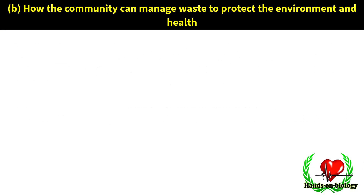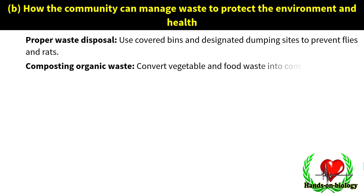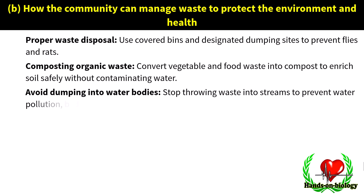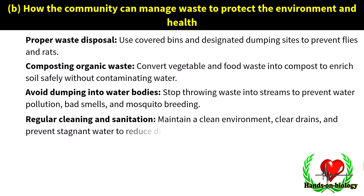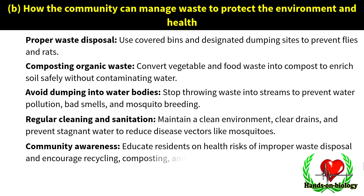How the community can manage waste to protect the environment and health: use covered bins and designated dumping sites to prevent flies and rats. Convert vegetable and food waste into compost to enrich soil safely without contaminating water. Stop throwing waste into streams to prevent water pollution, bad smells, and mosquito breeding. Maintain a clean environment, clear drains, and prevent stagnant water to reduce disease vectors like mosquitoes. Educate residents on the health risks of improper waste disposal and encourage recycling, composting, and safe dumping.